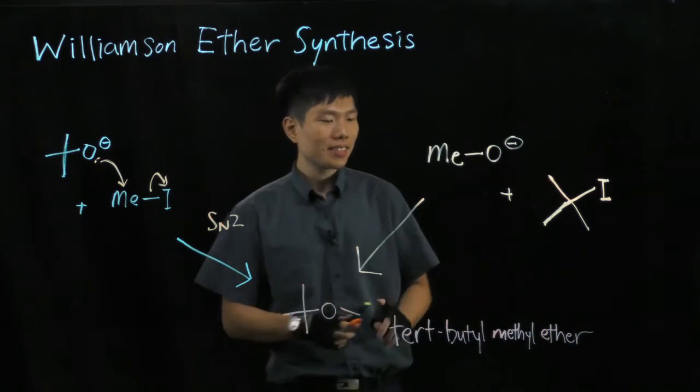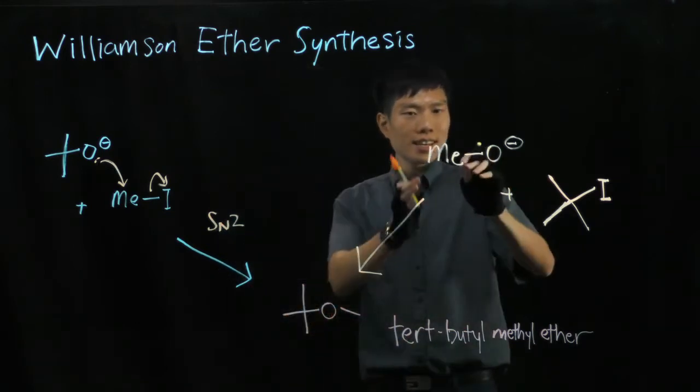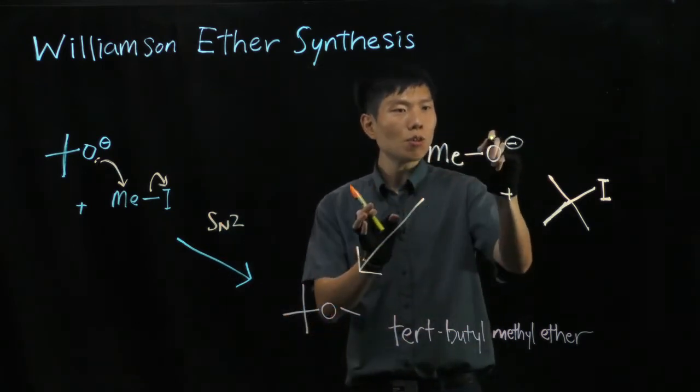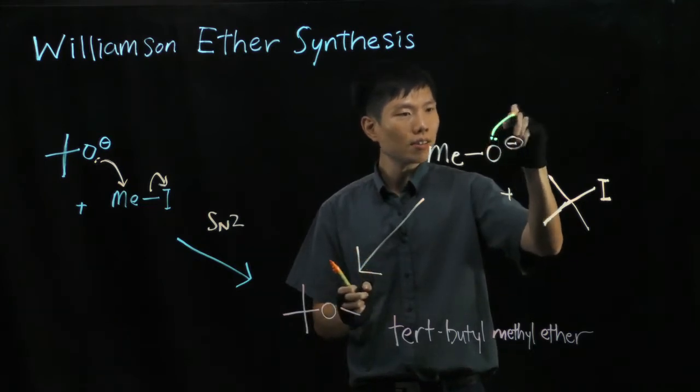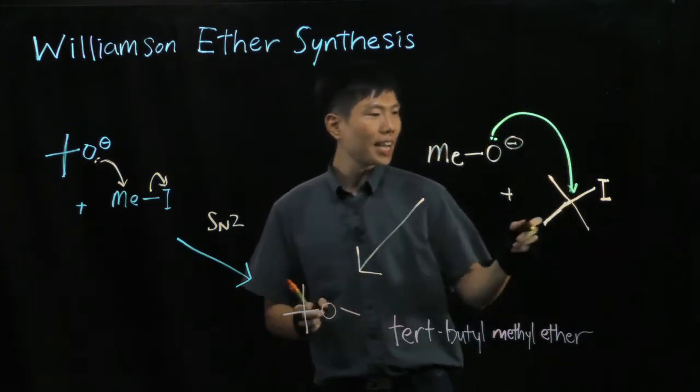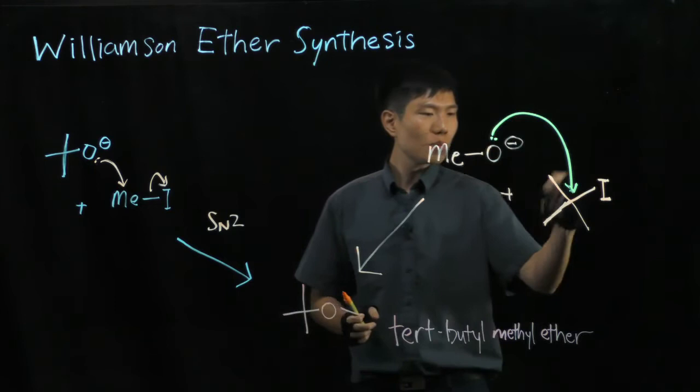At the other side, we are using a methoxide here, the nucleophile, to kick out the iodide from a tertiary butyl iodide.